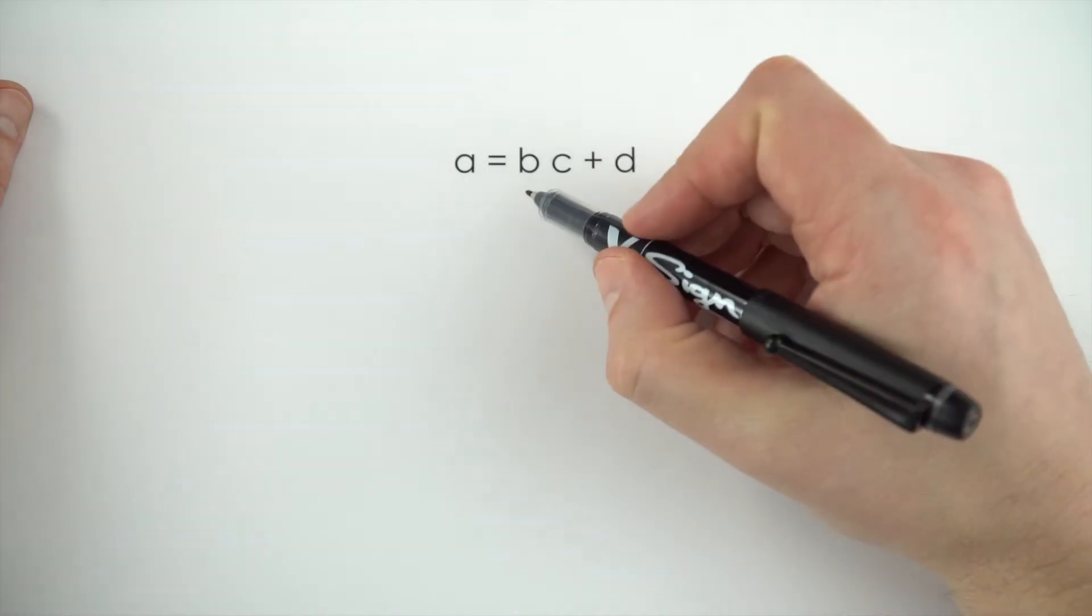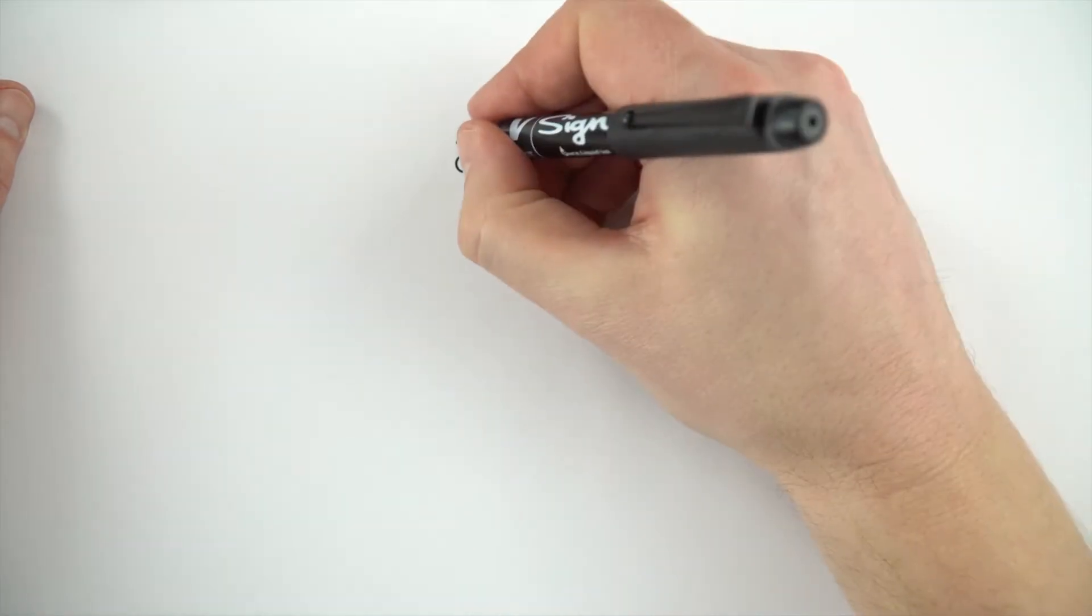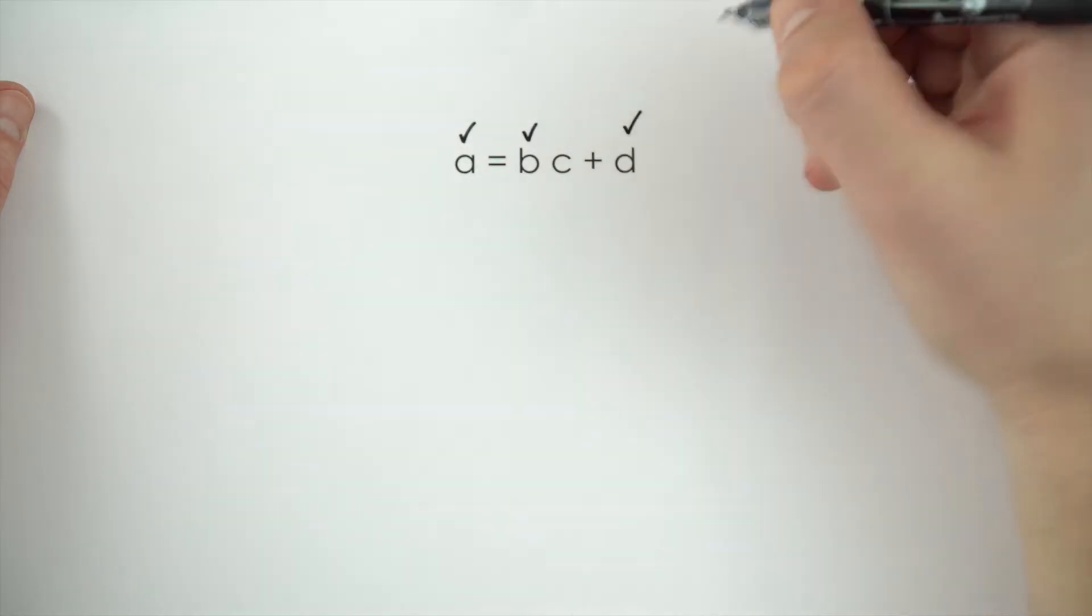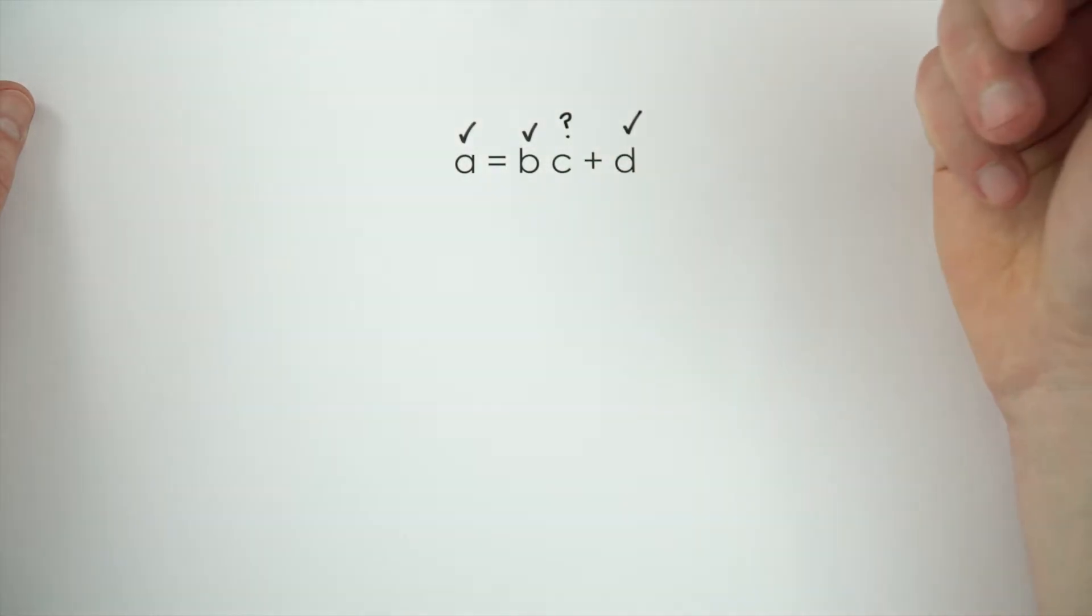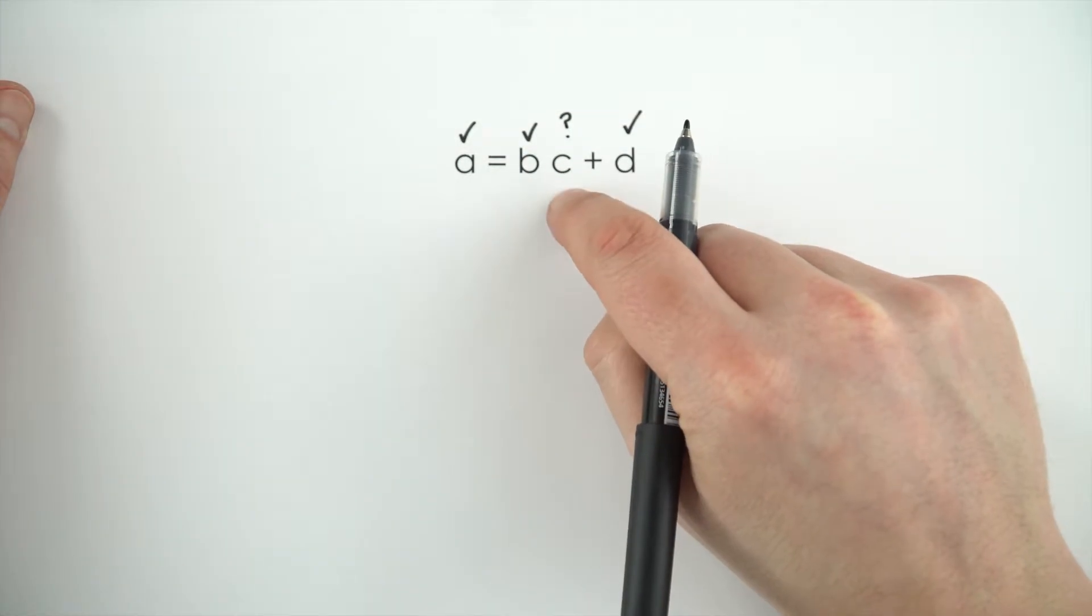But what if a equals bc plus d? And again, we knew the values of a, b, and d, but we didn't know the value of c. Again, we can rearrange this to make c the subject.